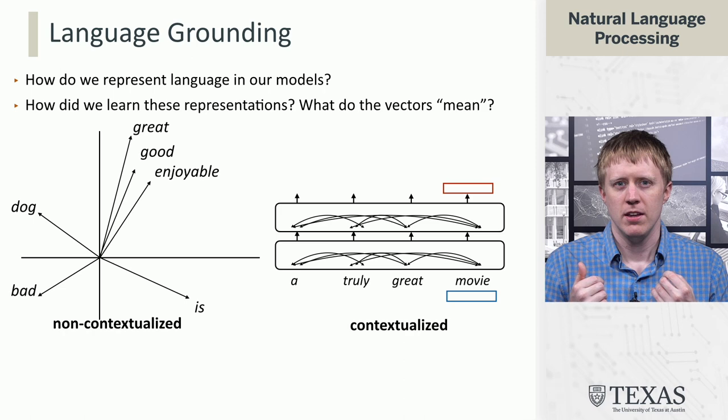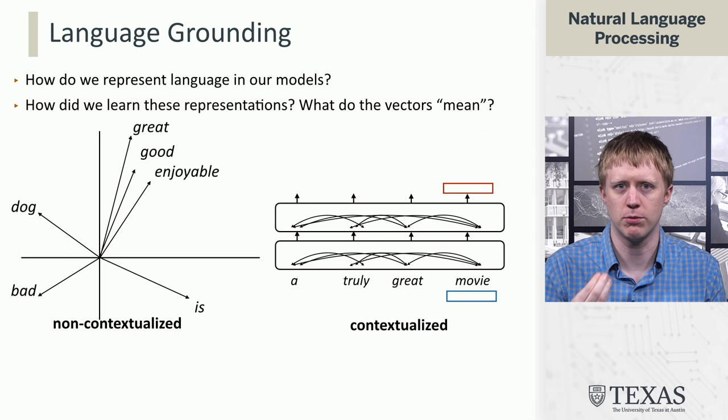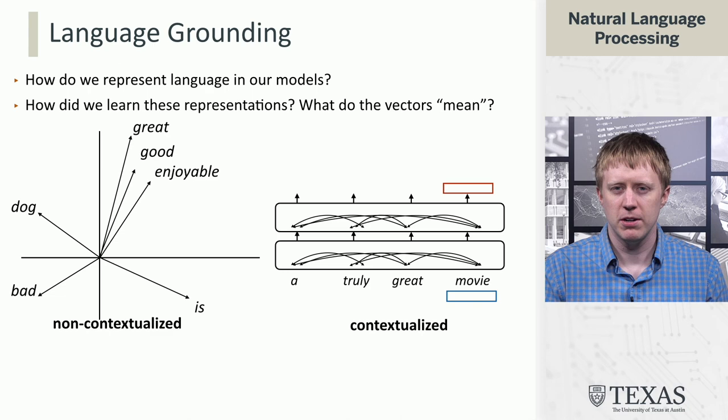If we think about how language is represented in our models currently, we're using vectors for a lot of it — either non-contextualized word2vec or GloVe embeddings, or obviously most of this class has been about these contextualized embeddings within language models. And so we've thought about things like word similarity, like 'good' and 'great' being similar to each other and having similar vector representations.